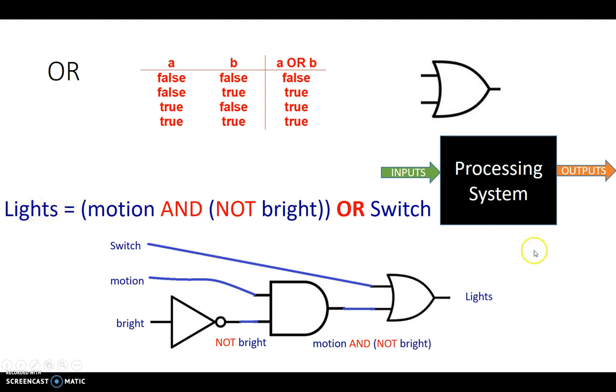The circuit can be drawn as the following with a combination of a NOT gate and the AND gate that we saw in the previous video and the OR gate that we are just seeing right now. So motion, here's motion, ANDed with NOT bright. So bright goes through a NOT gate to produce NOT bright, gets ANDed by this AND gate to produce motion and NOT bright.